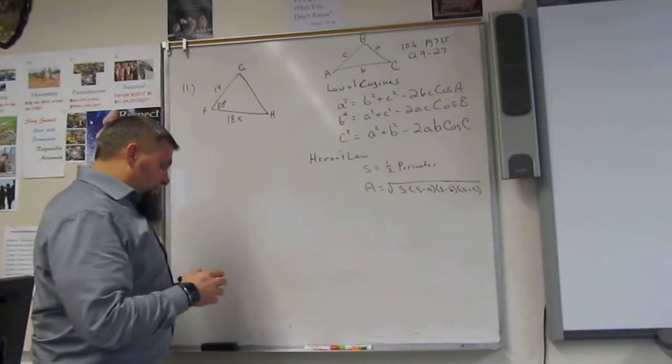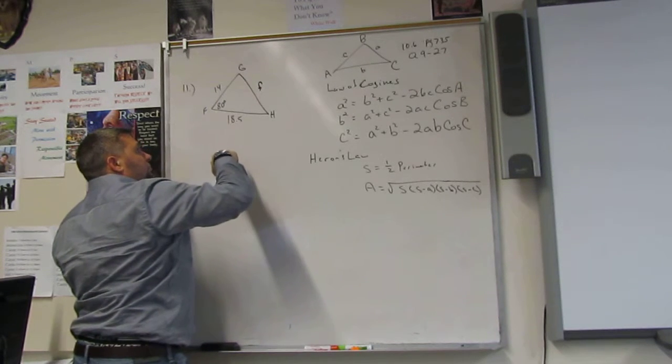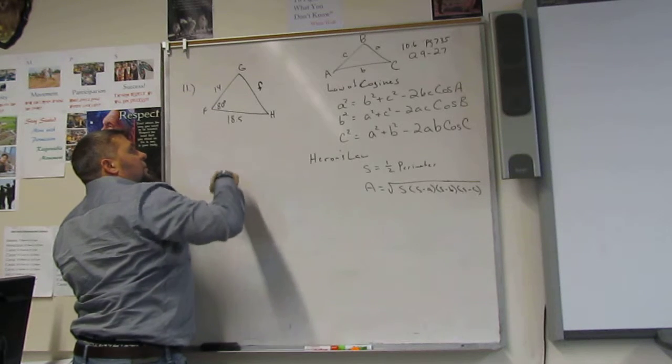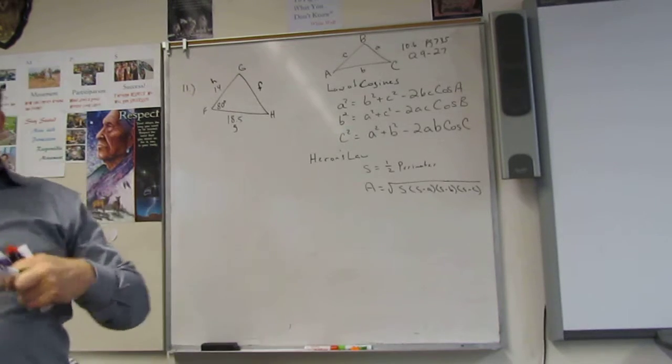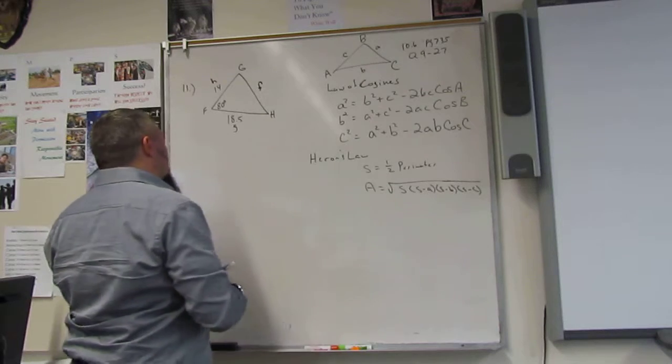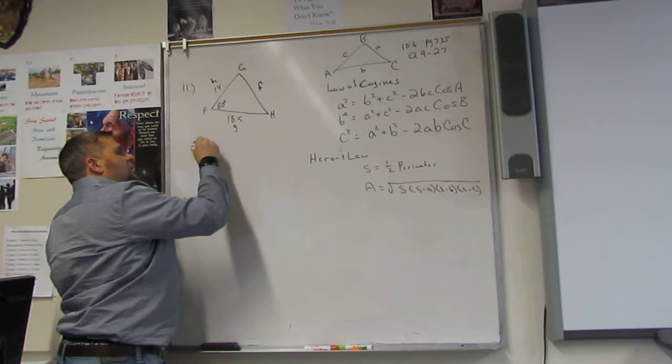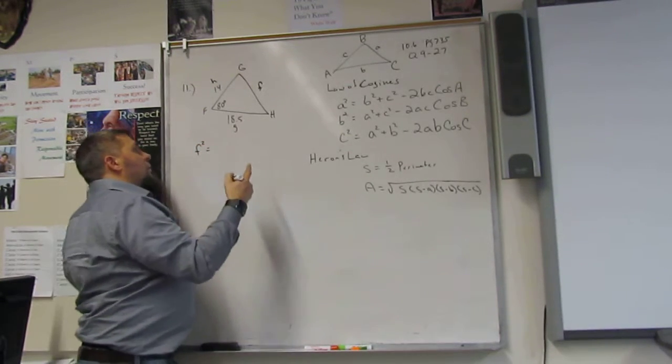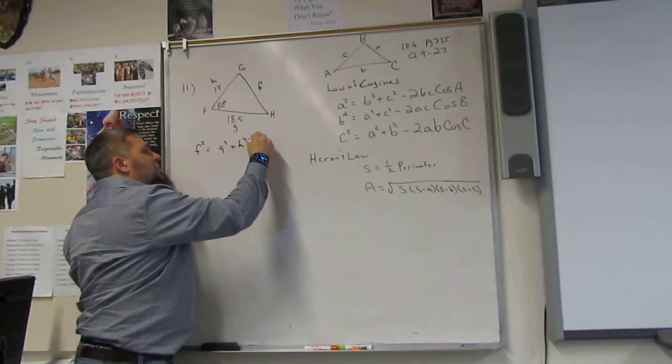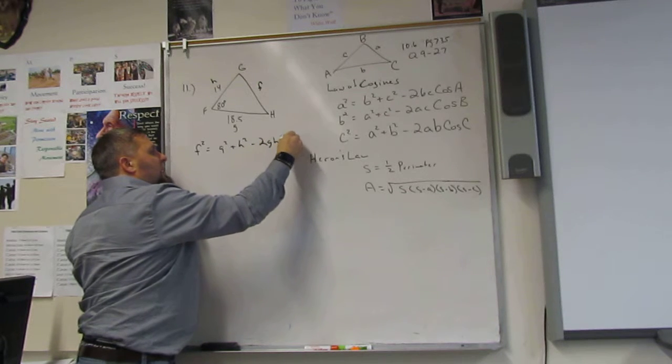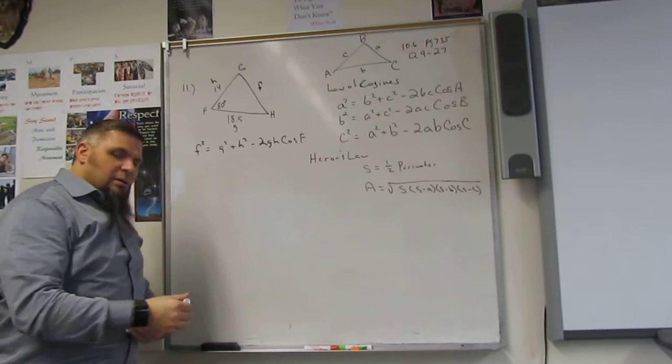In this case, we're going to rewrite the formula because we're looking for little f. Because we have f, we have little h, and we have little g. And I like to just plug those in so I can see them and make reference to them. So now I'm looking for little f. So that means f squared is equal to g squared plus h squared minus 2gh cosine big f. No big deal. We got that.